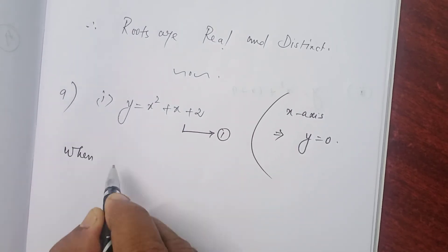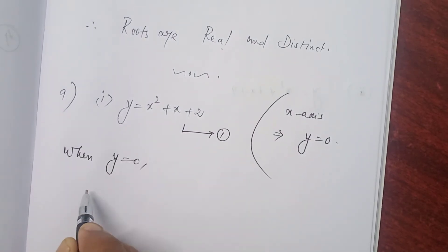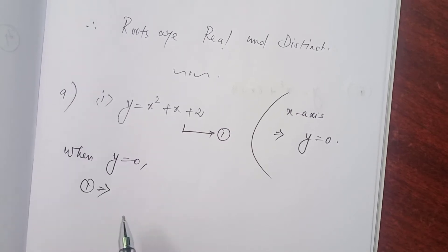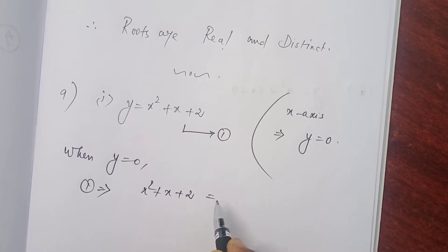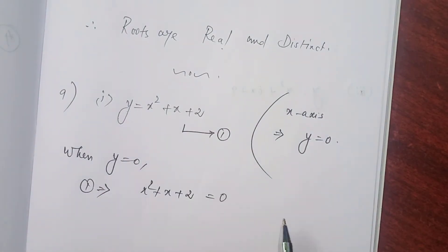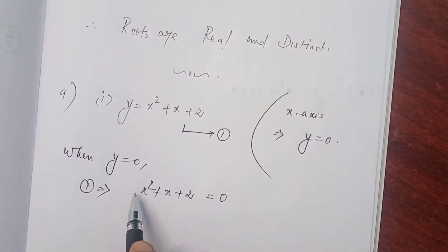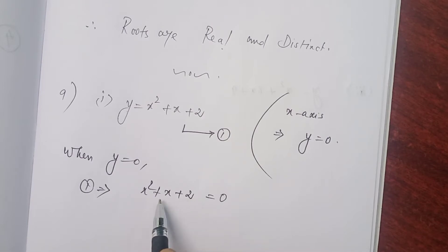When y = 0, equation 1 implies x² + x + 2 = 0. We can factorize if possible. Coefficient of x² is 1; 1 × 2 = 2; product 2, sum 1 — not possible. It cannot be factorized.